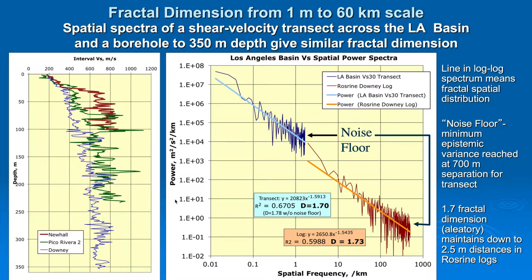If we take the 400-meter-deep Ross-Rhein Downey log — the blue line on the left — and plot its spatial spectrum on the same plot, you can see that it connects to and follows pretty much the same fractal line. Both deviate from that line at their noise floor, which is the epistemic variance due to uncertainty in the analysis and the waves recorded in the field. That is reached at about 700 meters separation for the transect values and about 2.5 meters vertical separation for the Ross-Rhein logs.